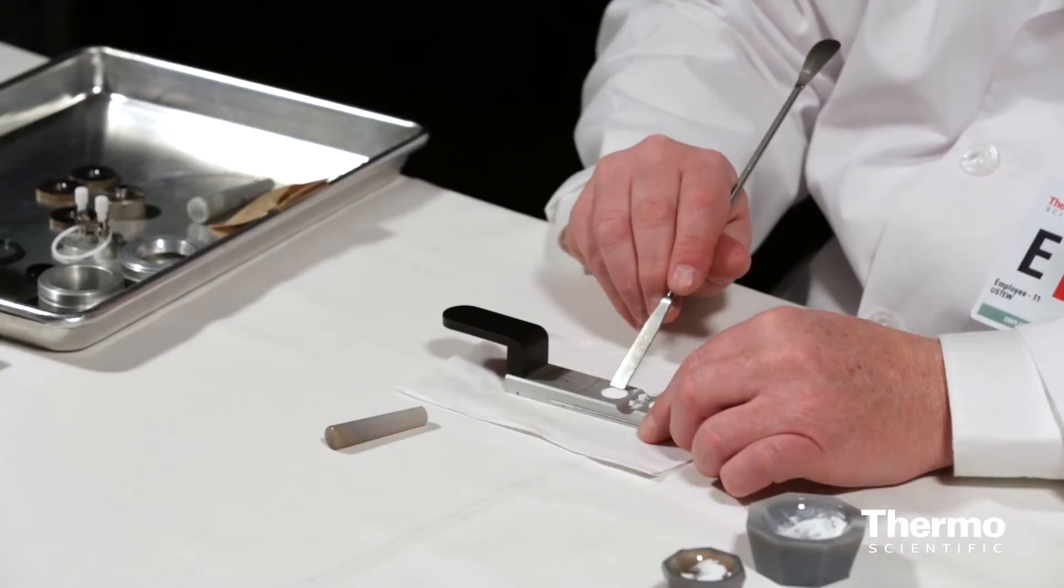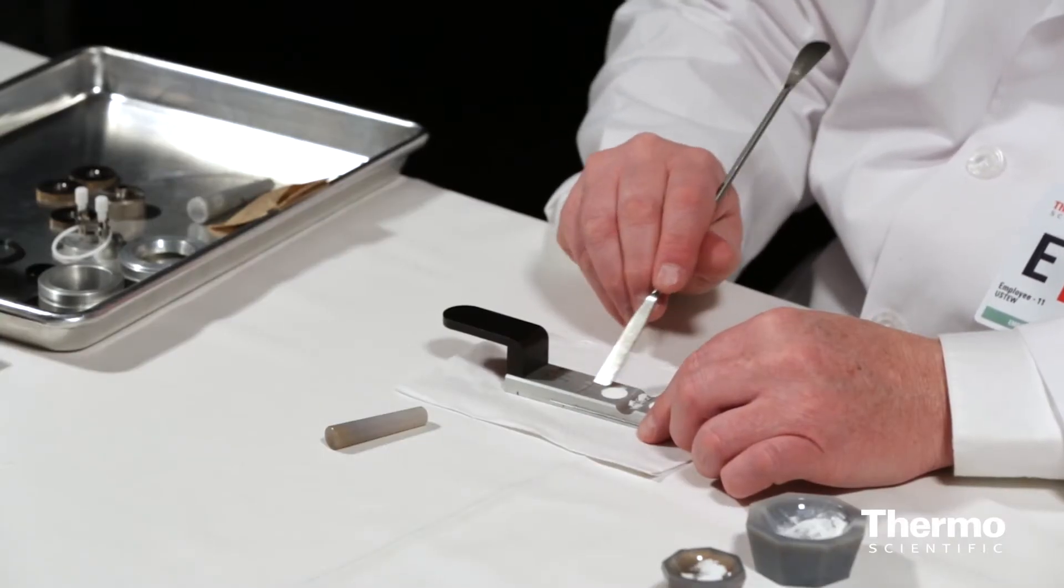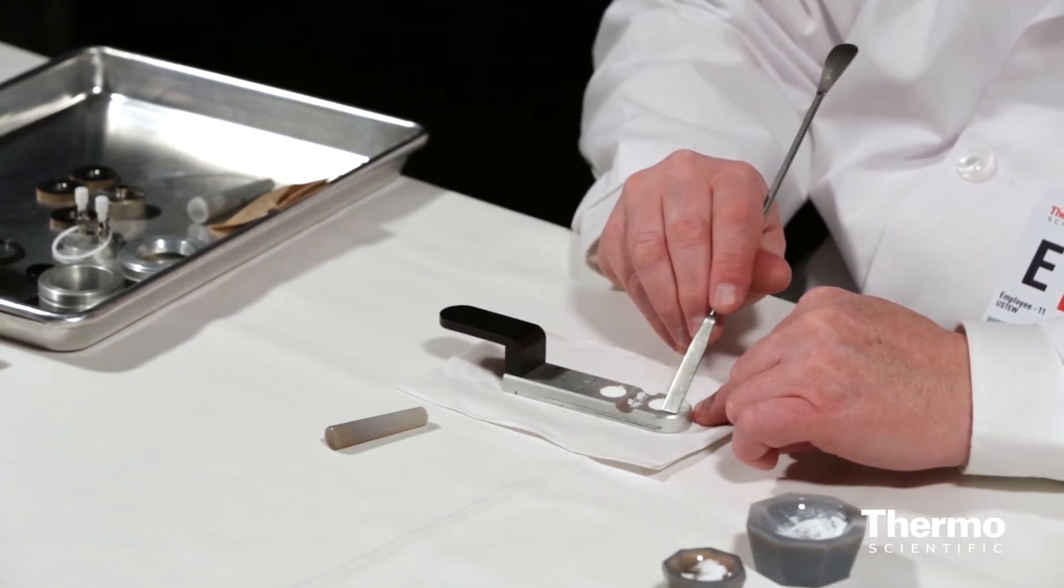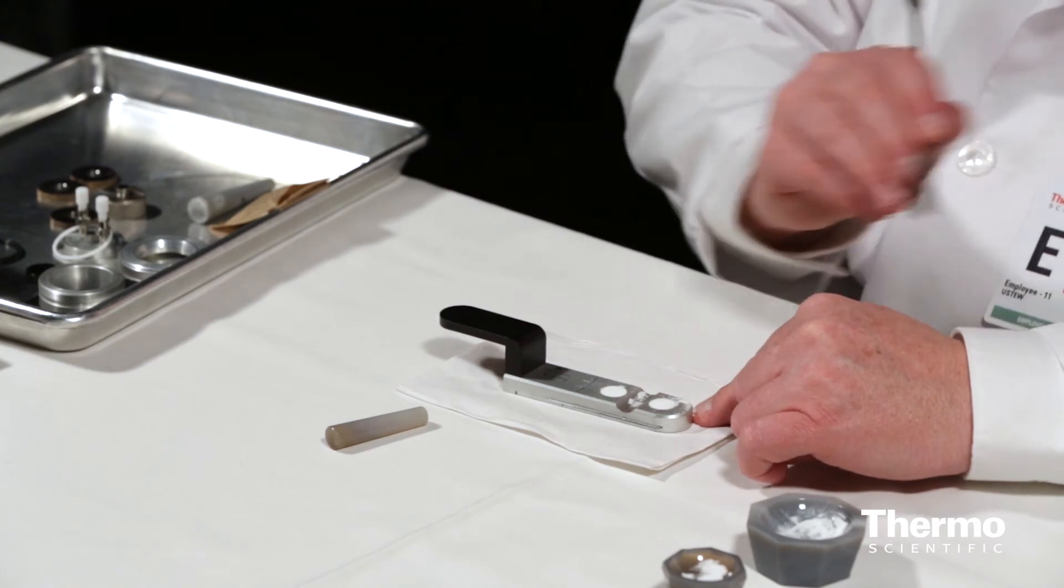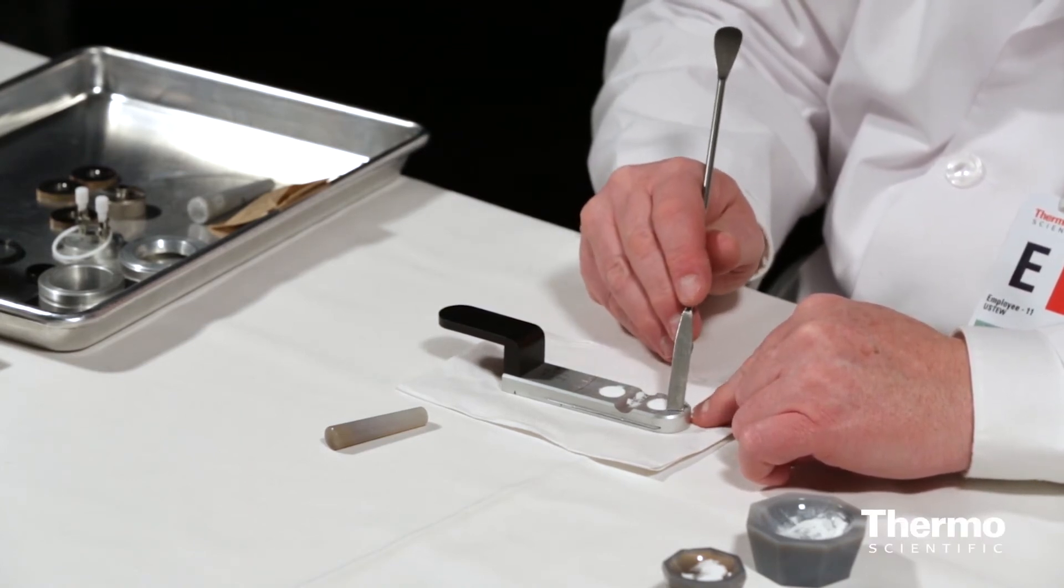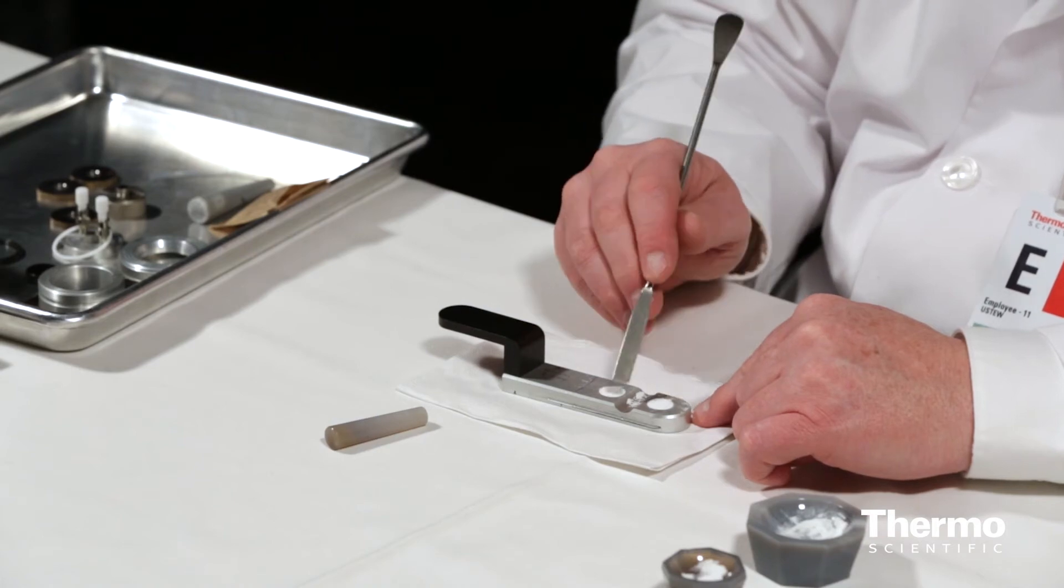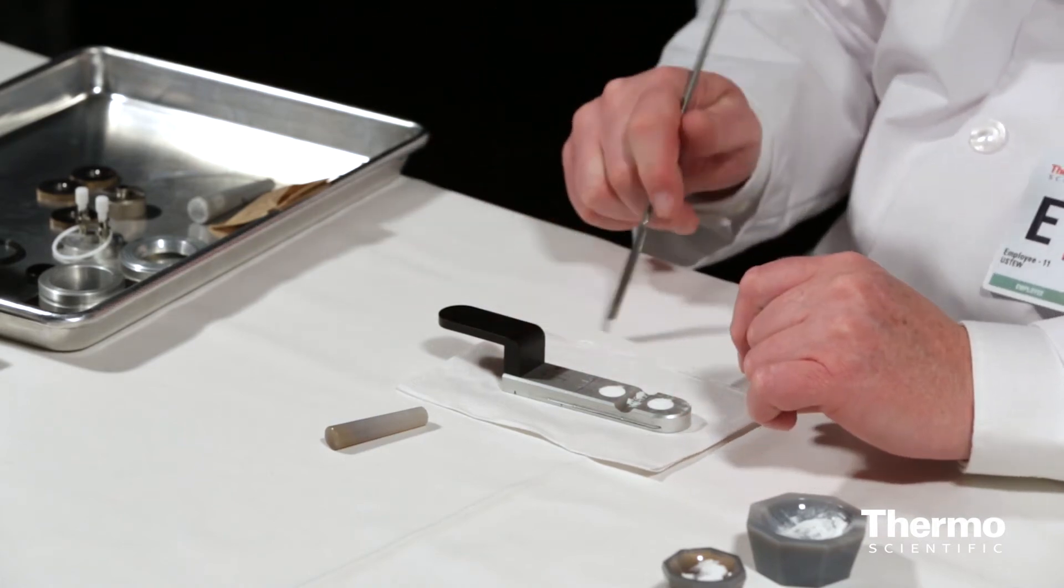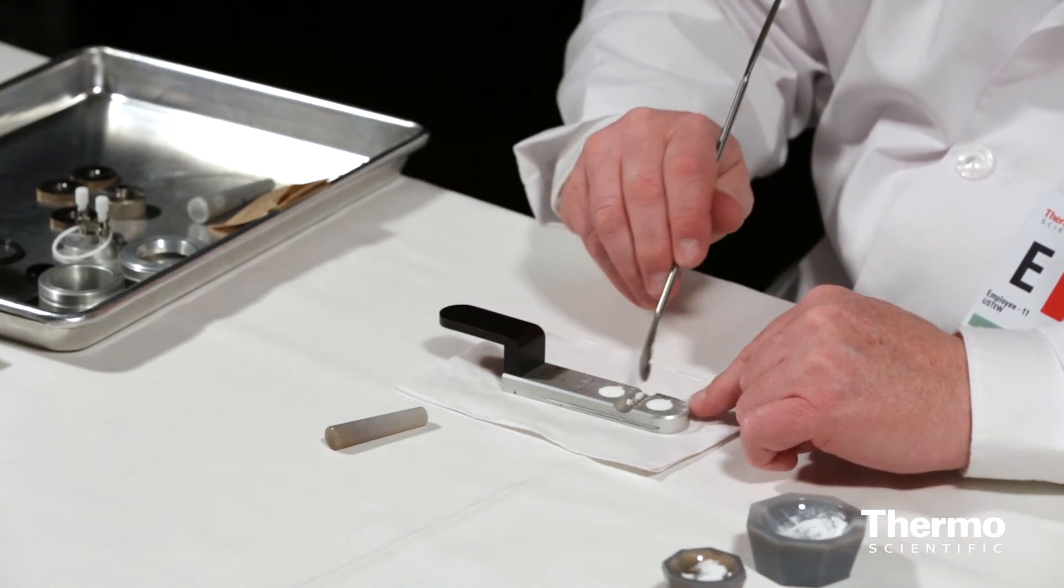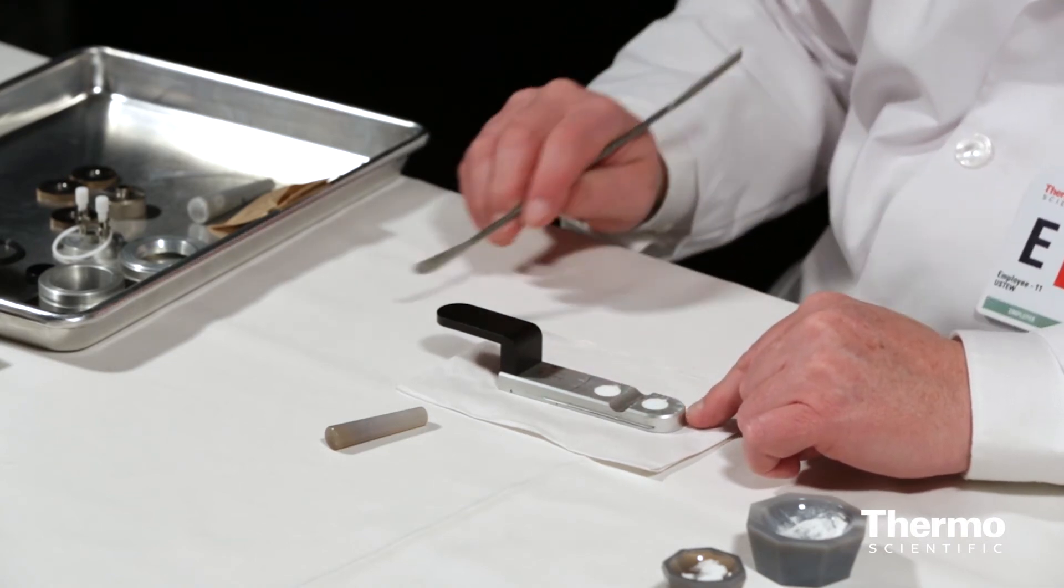And then I'll just scrape off the excess from around the outside edges, which I should be able to do using the spatula without disturbing the sample itself. And if I leave some particles on it, it really won't matter because the optics of this accessory are above the sample, not below it. So any sample that falls off doesn't end up in the optics of the instrument.